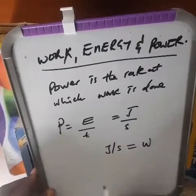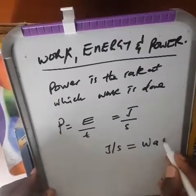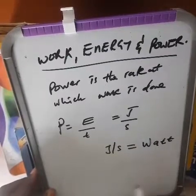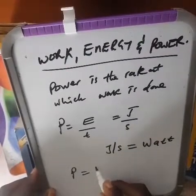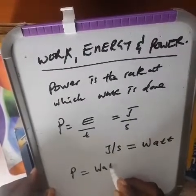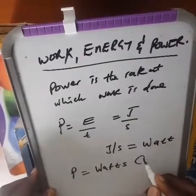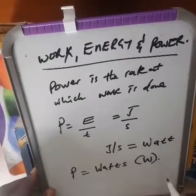Energy is given in joules and time is given in seconds, so a joule per second is what you call a watt. Power is measured in watts, written as W.